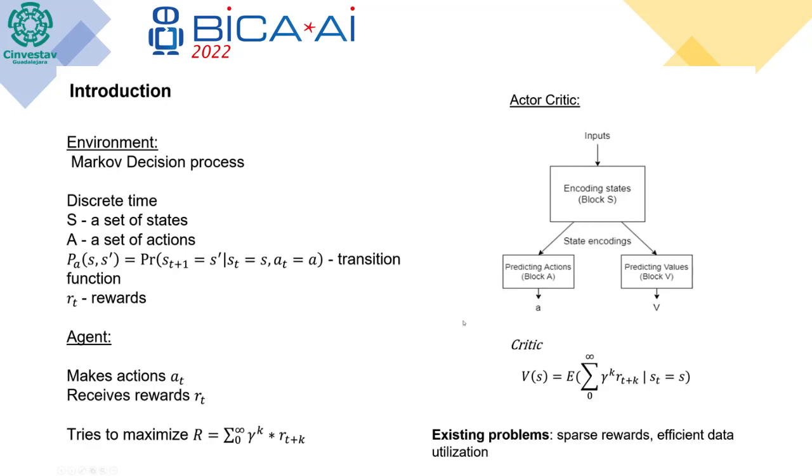Common difficulties for this and many other algorithms are sparse reward, because sparse reward makes it a lot harder to explore the environment and to find the best strategy, and efficient data utilization. That's why not only online learning algorithms exist.